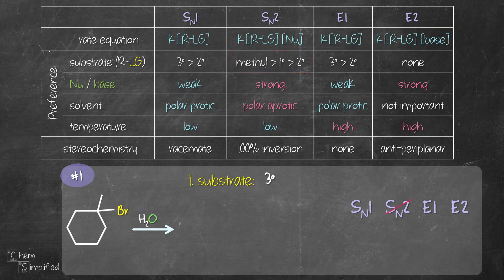Next, the strength of nucleophile or base. It's water which is a weak nucleophile and a weak base. Therefore, we're gonna rule out SN2 and E2 reaction because these two prefer strong nucleophile or strong base. Next is the solvent. H2O is polar protic and that's conducive for SN1 and E1 reaction because these two reactions form carbocations.